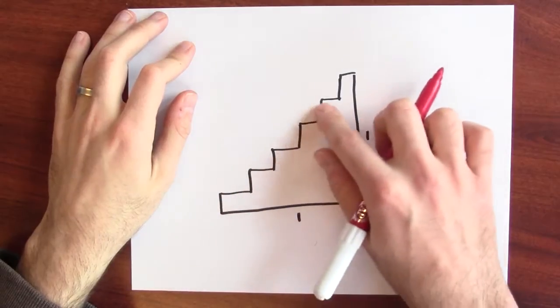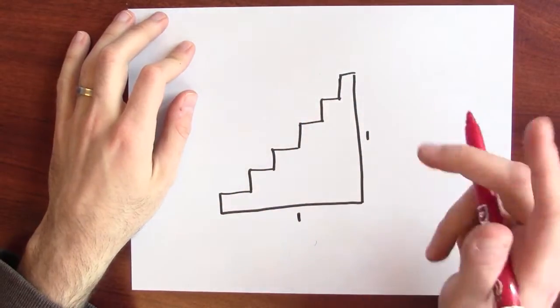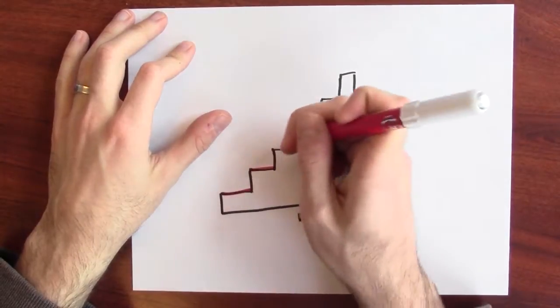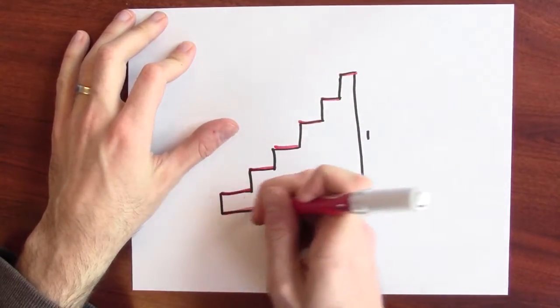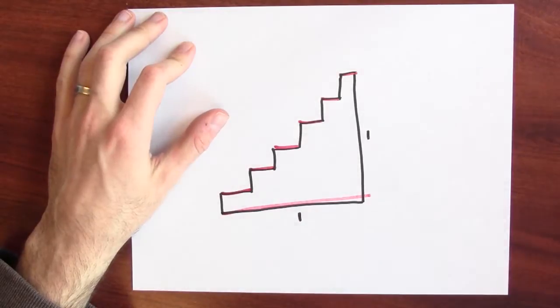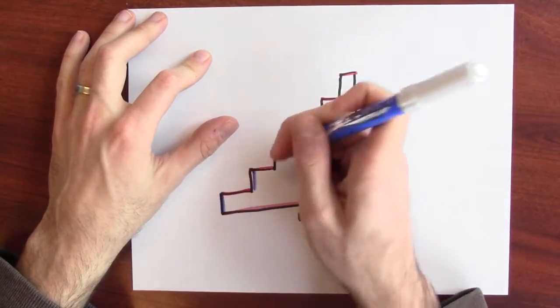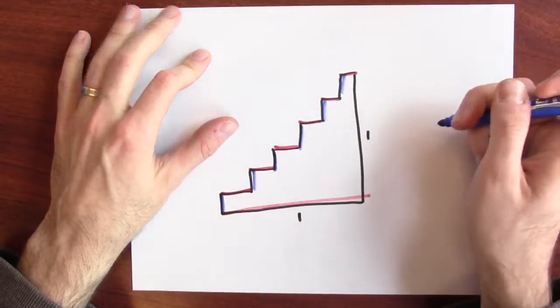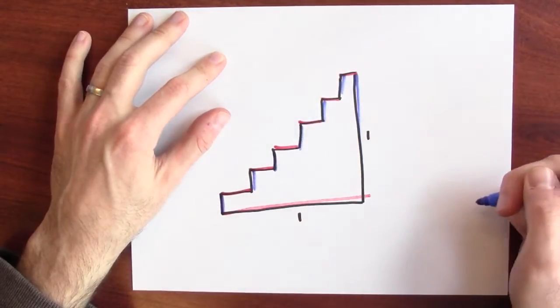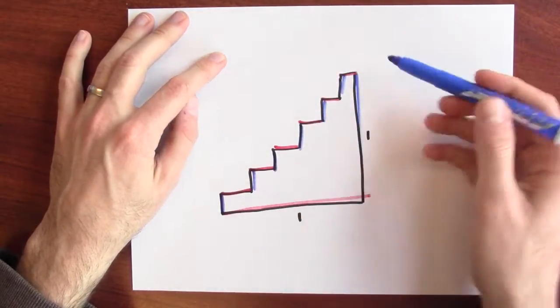What's the length of the staircase? The total length of the staircase is 2. To see that, just look at the horizontal sections of the stairs. That's the same as the entire bottom edge. And the vertical sections of the staircase is the same as this whole edge. So, 1 plus 1 is 2.